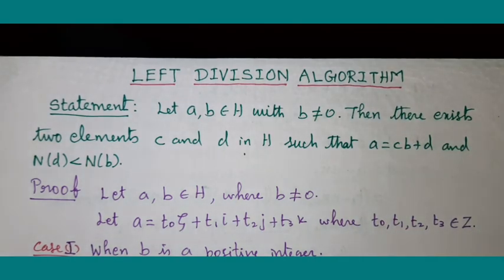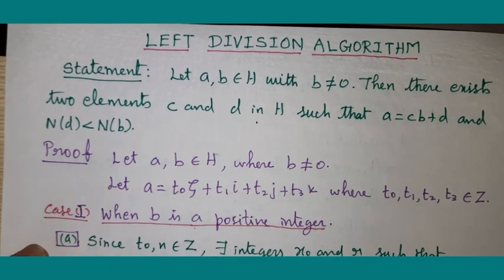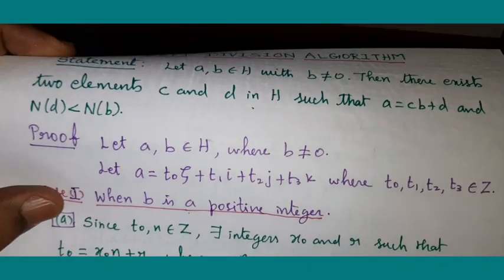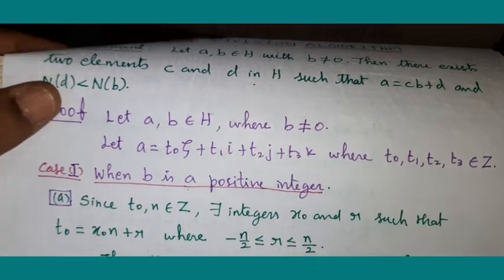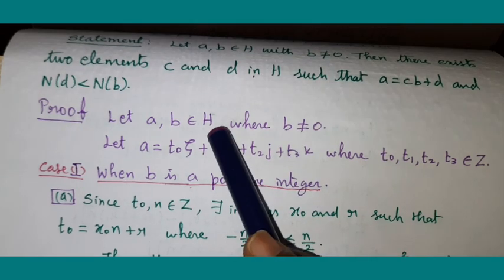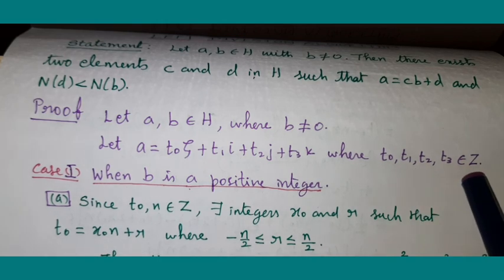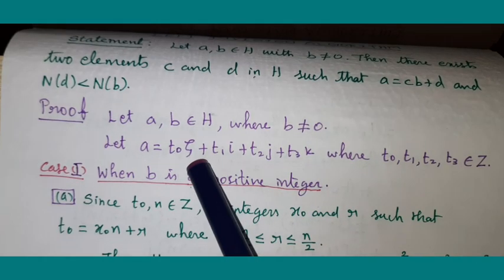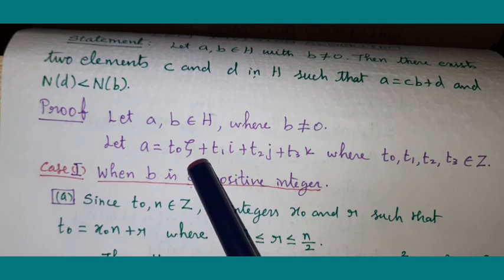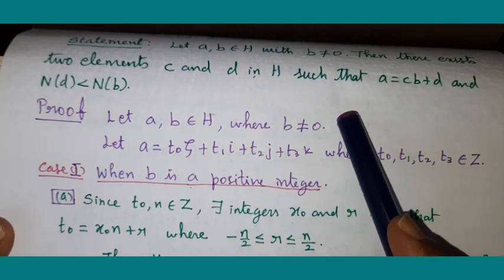Having justified the name of the theorem, let us go to the proof. First, let us take two elements as given in the statement with B not equal to 0. Because A is in H, A will be of this form where its coefficients are in Z. Remember, Z is equal to one-half times (1 + i + j + k). Now we are going to prove this division algorithm in two cases.